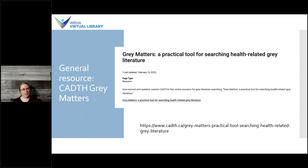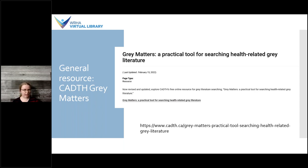Another good general resource is the CADTH Grey Matters checklist. This tool is geared towards systematic review type searching, but it provides a very extensive list of potential sources of grey literature broken down by type or topic area, as well as by country in many cases. For example, they have an extensive list of where you might find health technology assessment resources, broken down by international, Canadian, American, and other countries. I'd definitely recommend this as a resource if you're focused on systematic review searching, or just as a general resource to see the variety of potential places to look.